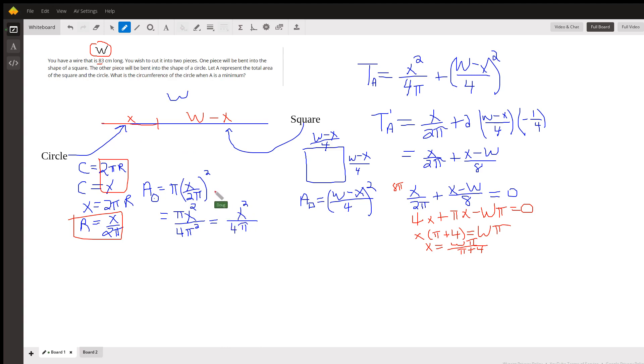So here's πr², which if I square this fraction and cancel out, I get x² over 4π. So there's the formula for the area of the circle.